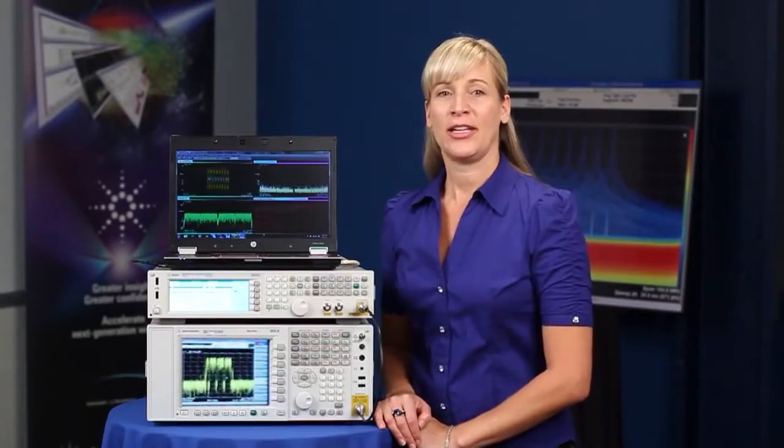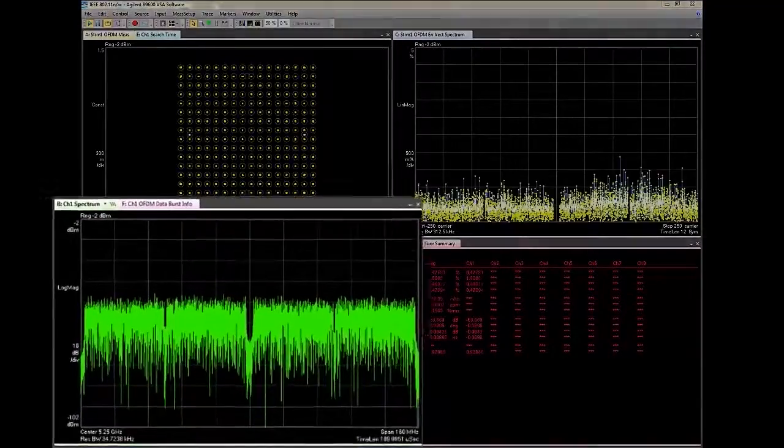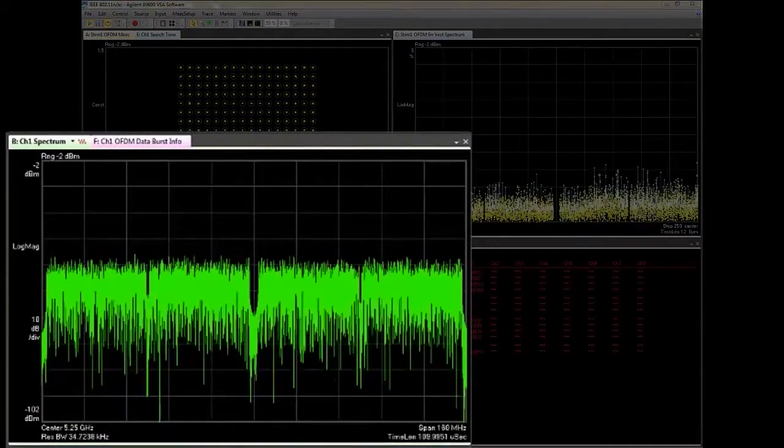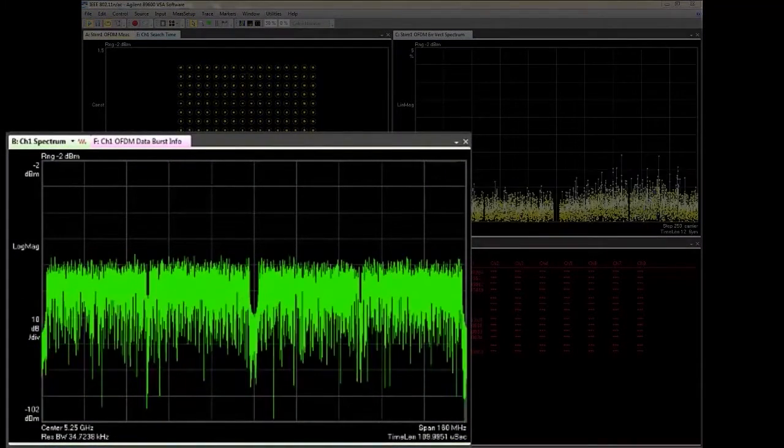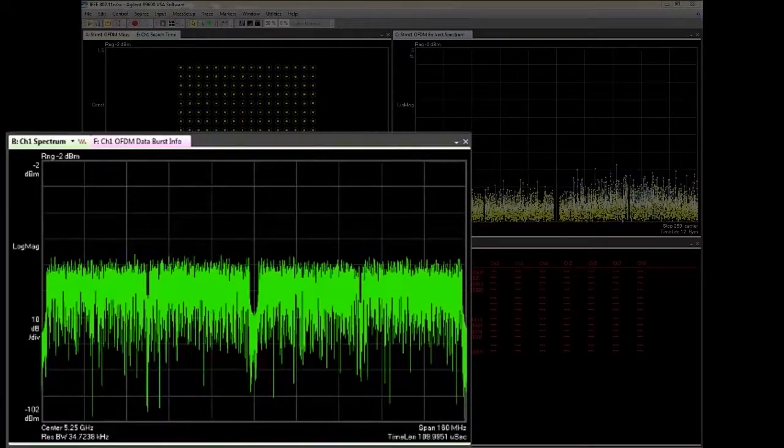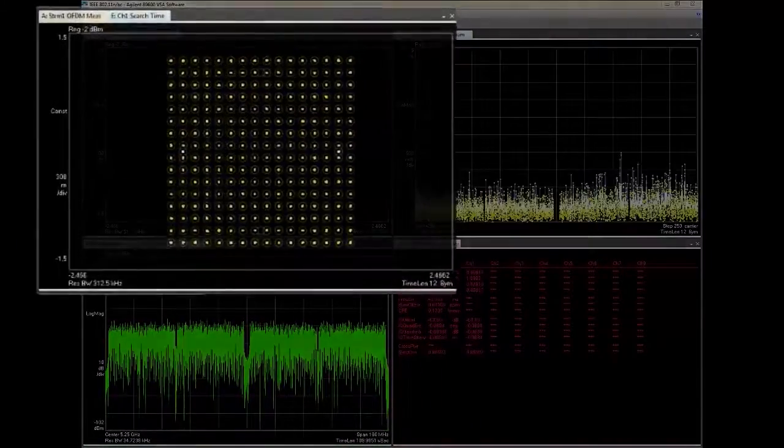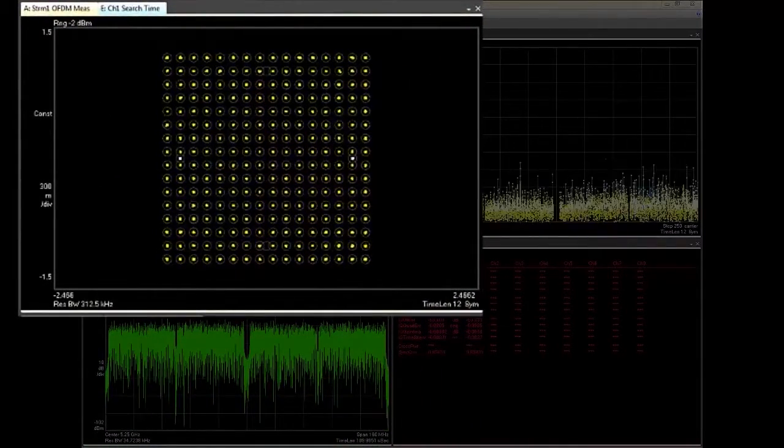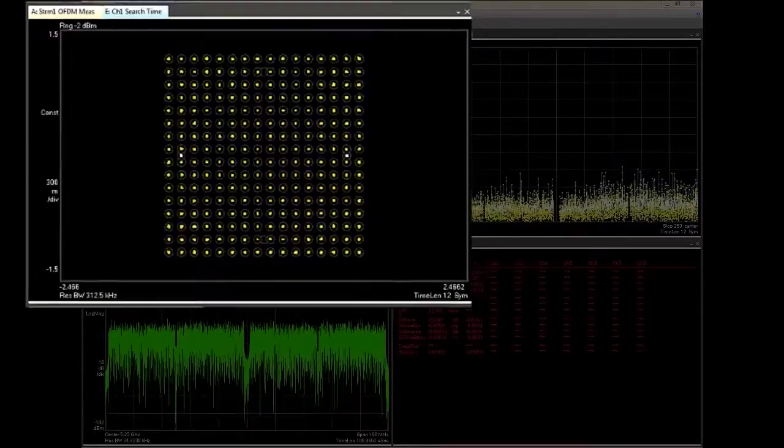Now let's take a look at the demodulation quality using our 89600 VSA software. You can see the full 160 megahertz channel centered at 5.25 gigahertz on the spectrum display. Also we can see the 256 QAM constellation as a result of the demodulation.